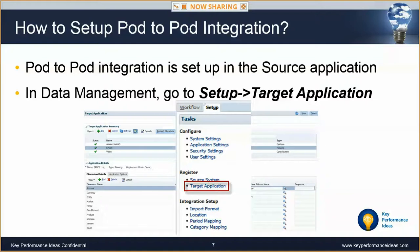So how do we set up pod-to-pod integration? Those familiar with data management will find this process very similar to setting up a flat file load. Those not familiar will see a number of small steps that may not make sense at first, but once you've navigated through the flow a couple of times, you'll have no problems. Pod-to-pod integration is initiated from the pod that contains the source data, so the first step is to open data management from the source pod.